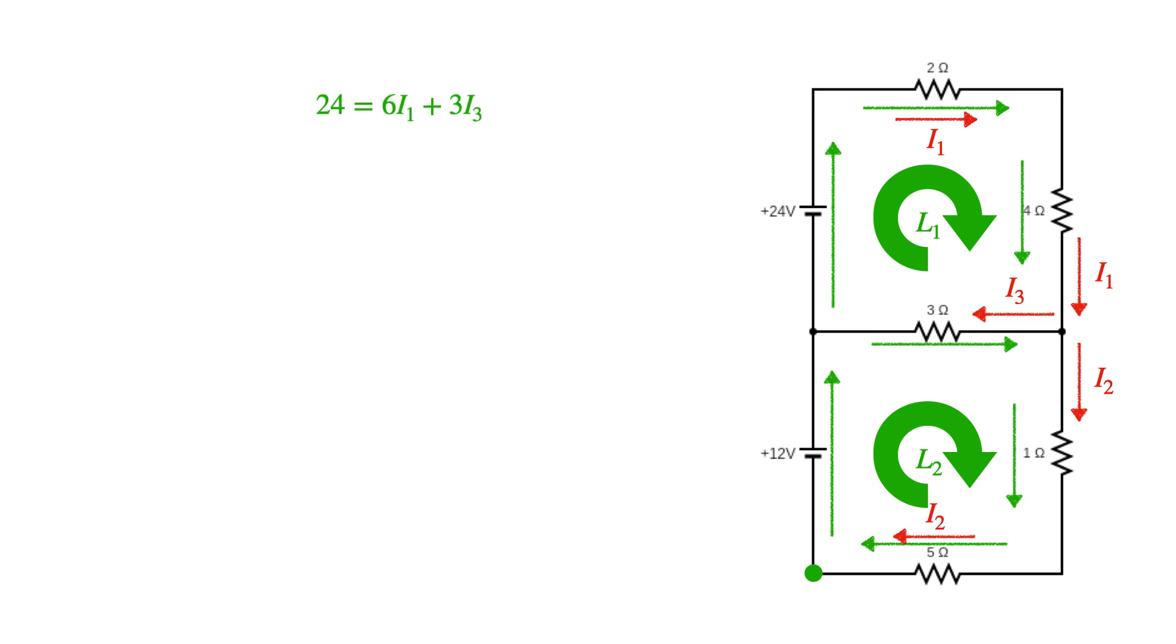Beginning with loop one and substituting in my rule for junctions, I can distribute, collect my terms, and here is my statement for my first loop in terms of I2 and I3.